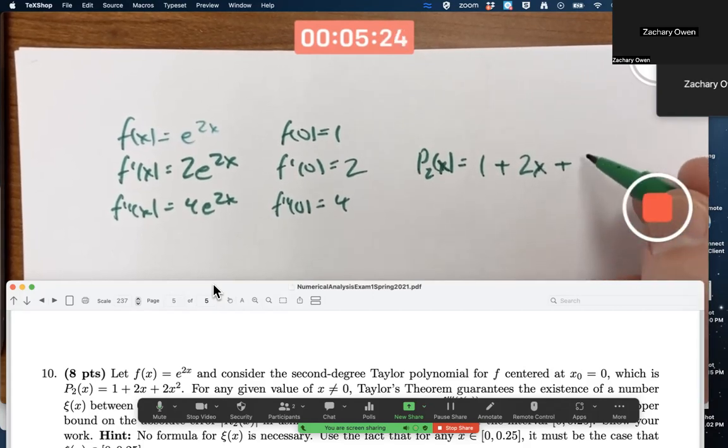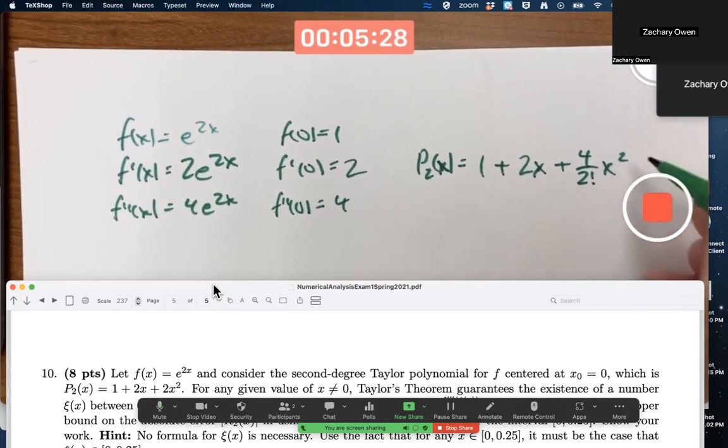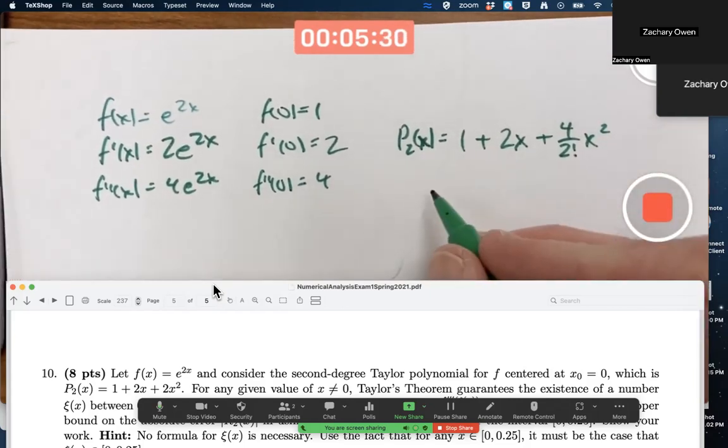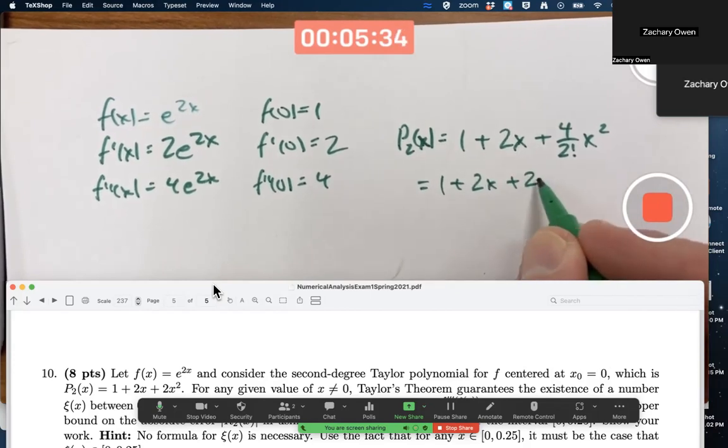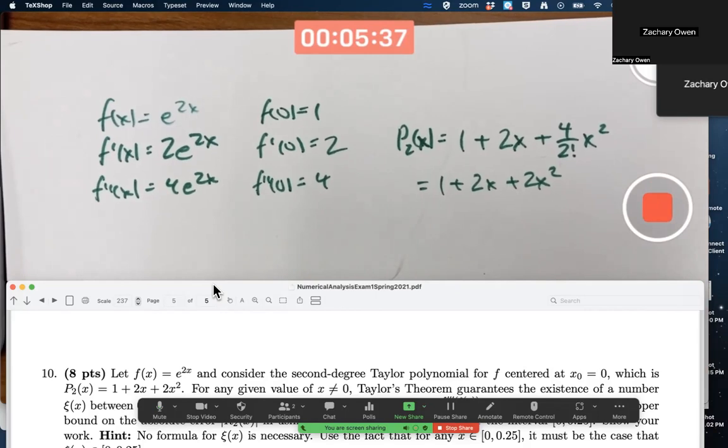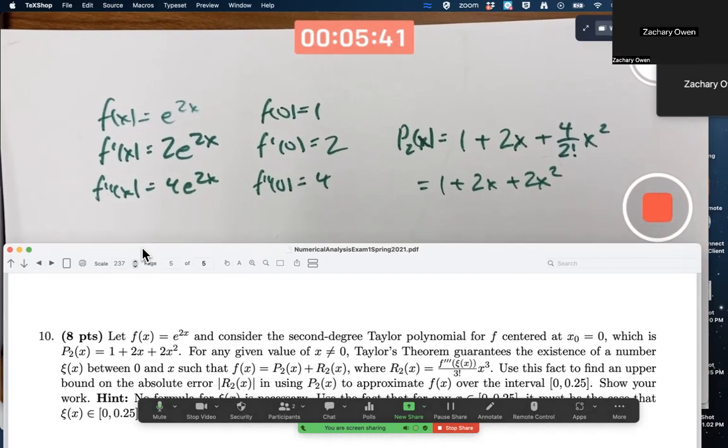plus f double prime of zero, which is 4, divided by 2 factorial times x squared, and of course 2 factorial is 2, so this simplifies to 1 plus 2x plus 2x squared. So that's just confirming the answer for the Taylor polynomial of degree 2.